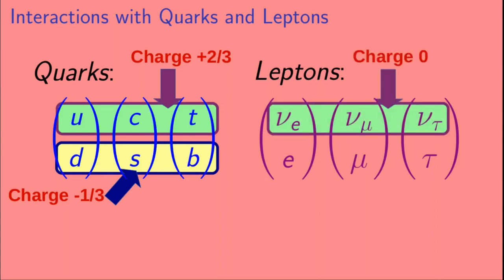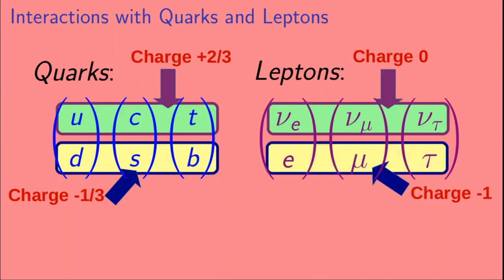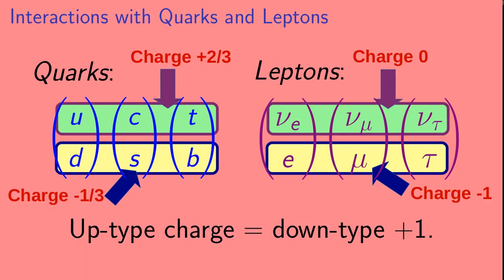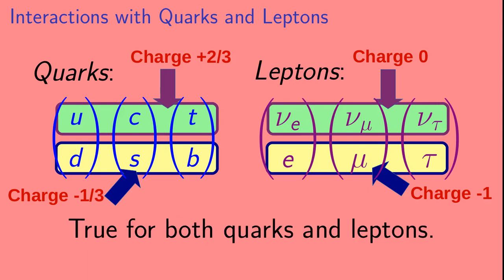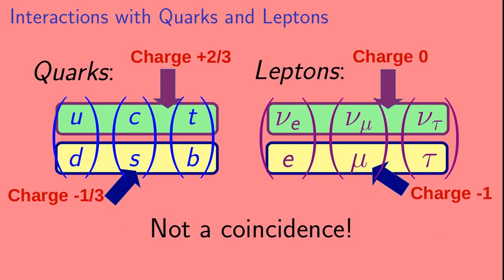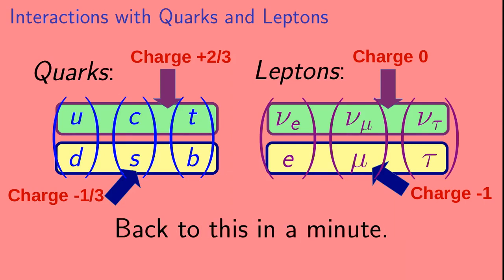For the leptons, each family has a neutrino, which has zero electric charge. And there's also a lepton in each family with a charge of minus one. These are the electron, muon, and tau, respectively. Note that in every set of parentheses, the upper entry has a charge that is one greater than that of the lower entry. This is true for both the quarks and the leptons. The quarks on top have a charge of plus two-thirds, which is one more than the charge of those on the bottom, minus one-third. And the neutrinos on top have a charge of zero, which is one more than the charge of the leptons on the bottom, which is minus one. This is not a coincidence. And we will come back to this.